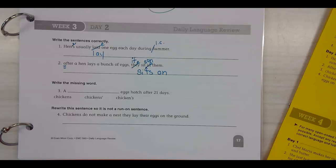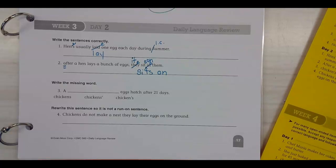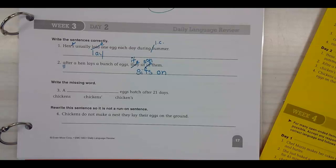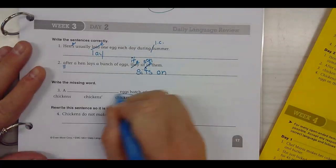All right. Write the missing word. A blank egg hatch after 21 days. A chickens, a chickens, or a chickens. You're right. Apostrophe S. Good job.